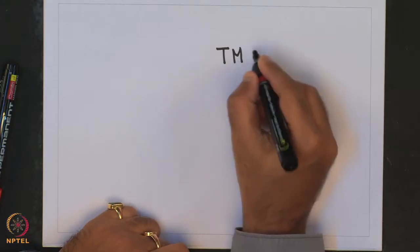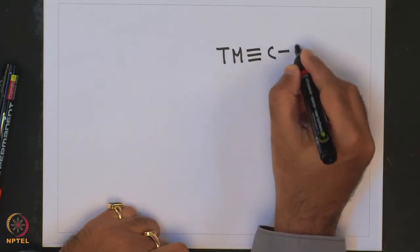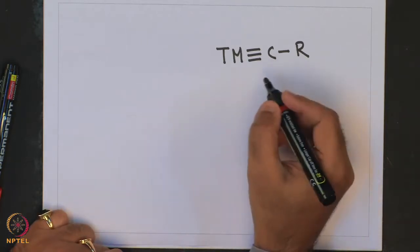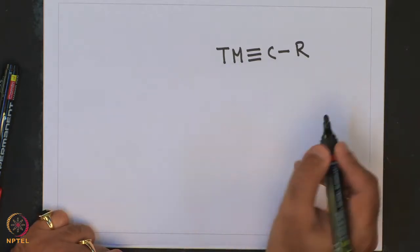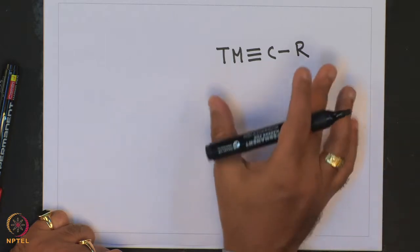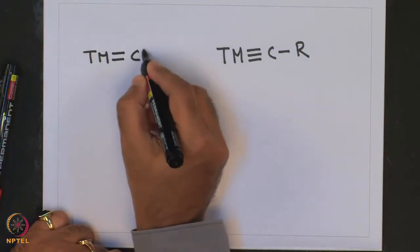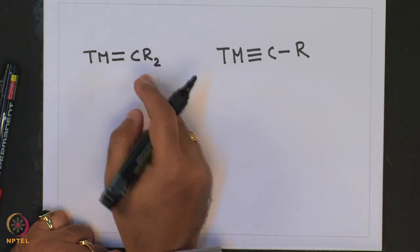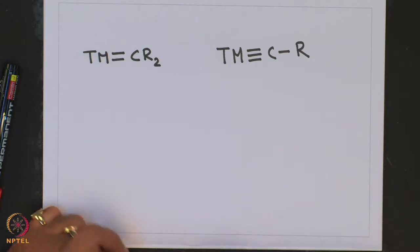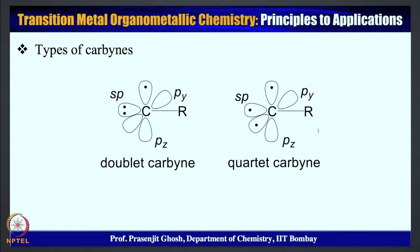These Transition Metal Carbene Complexes are designated with a multiple-bonded carbene moiety with the Transition Metal. These Transition Metal Carbene Complexes were discussed in the context of having double bond character between the Transition Metal and the carbene moiety. With regard to Transition Metal Carbene Complexes, we have seen that they come in two classes: Doublet Carbene and Quartet Carbene.